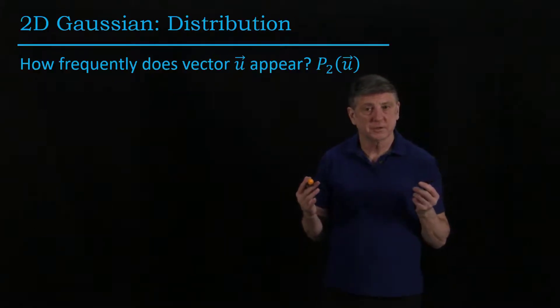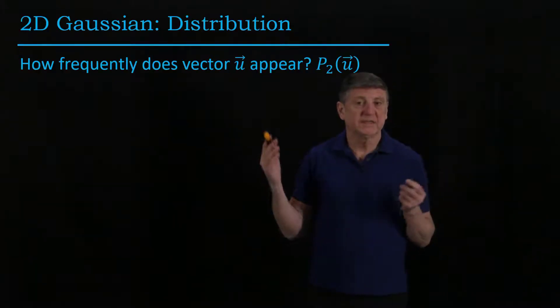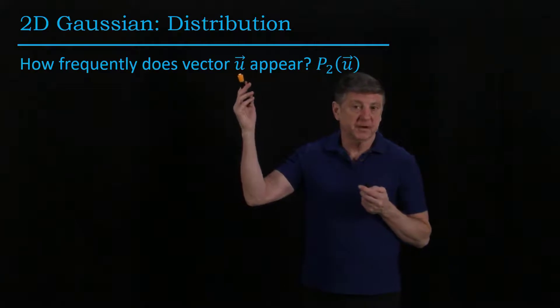What happens in two dimensions? How frequently does a vector, a two-dimensional vector appear?